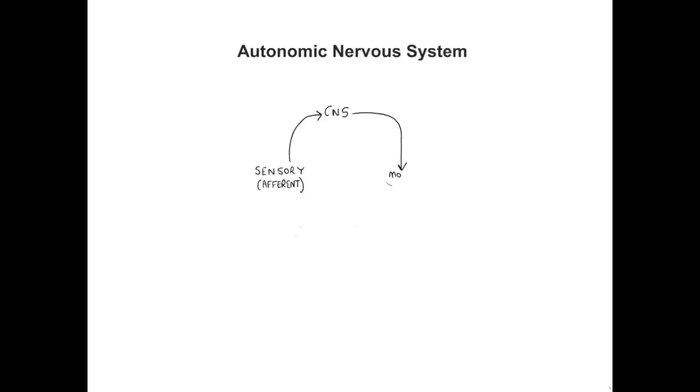We then have the motor or the efferent arm of our peripheral nervous system, which is carrying signals out from the central nervous system to certain target tissues.